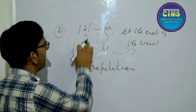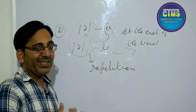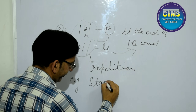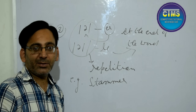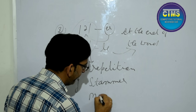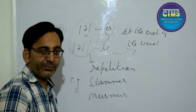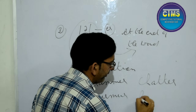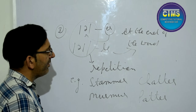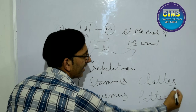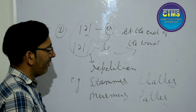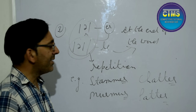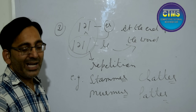I want to give you examples of words ending with the schwa sound that suggest repetition. For example, 'stammer' — there is a repetition of sound. Another word is 'mama' — again, there is repetition. 'Chatter' and 'patter' also follow this pattern. Similarly, words ending with the L-E combination giving a schwa sound also suggest repetition. For example, 'drizzle' — light rain falling continuously — and 'dribble,' when saliva keeps on coming.